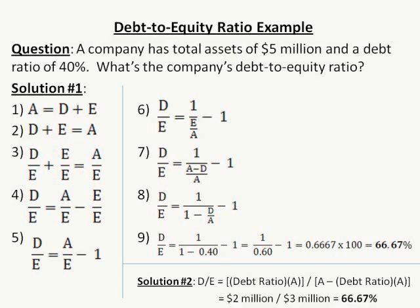Let's now look at these solutions. In solution one, I don't even need to use the total assets of $5 million to solve this — all I need is the debt ratio of 40%. So let's start off with step one: this is the basic accounting identity. A balance sheet must balance — assets equals debt plus equity, i.e., A equals D plus E. Step two, just rearrange that: D plus E equals A.